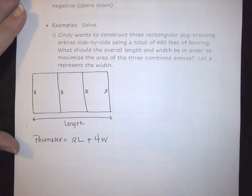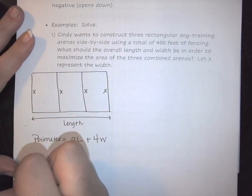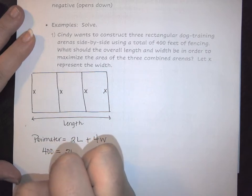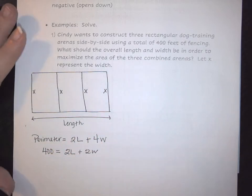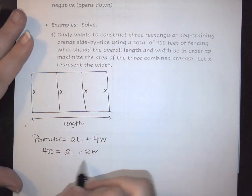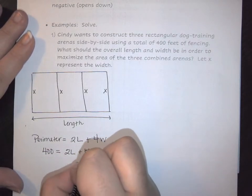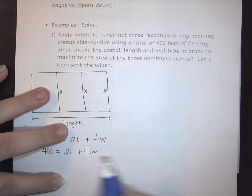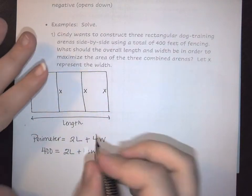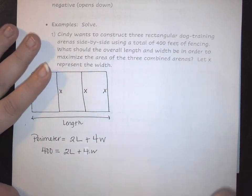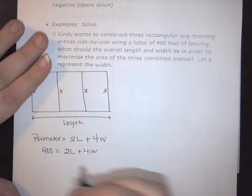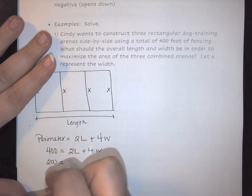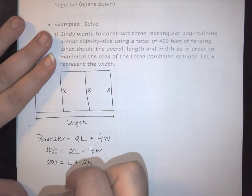So once we figure that out we simply need to set things up and solve. Here my perimeter is that 400 equals twice the length plus four times the width. So we can simplify this down by dividing everything by two. So here we get that 200 equals length plus two width.